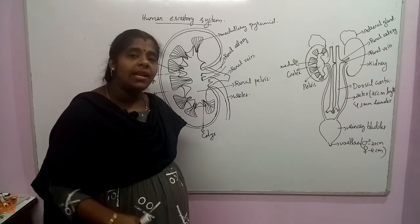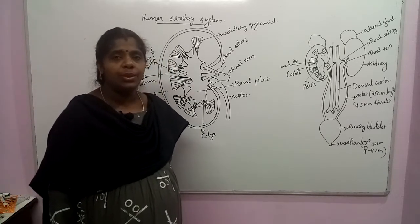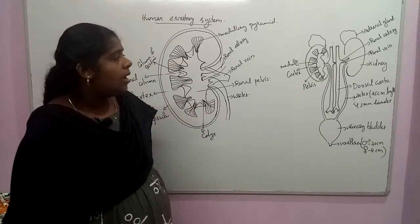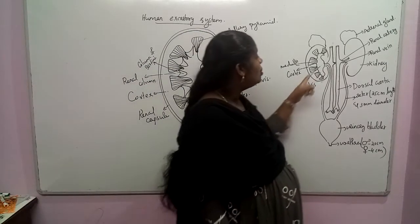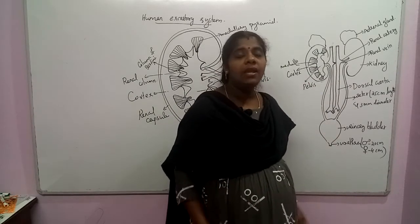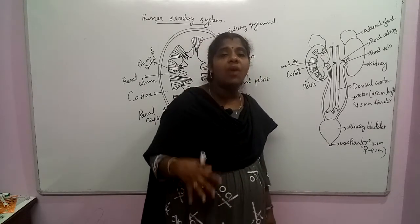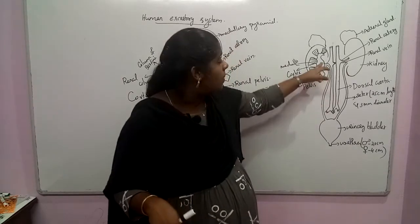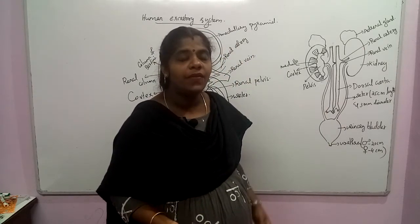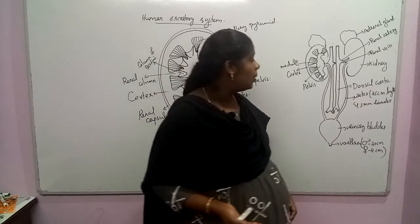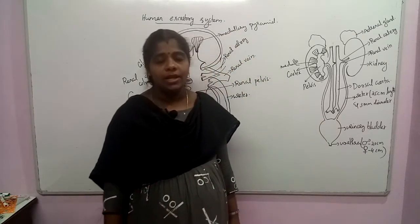Blood vessels enter the kidney through the dorsal aorta via the hilum region. The kidney is the major excretory organ in humans. Two ureters come out from the kidneys, carrying filtrate containing nitrogenous waste in water — that is, urine. The ureters are 25 cm in length and 3 mm in diameter.